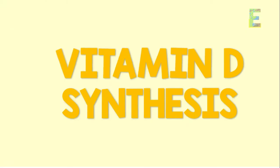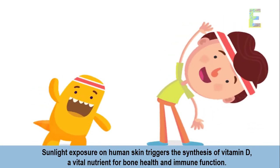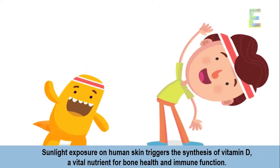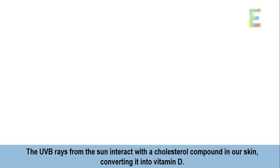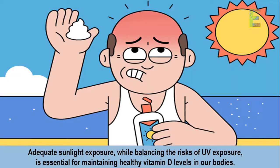Vitamin D Synthesis. Sunlight exposure on human skin triggers the synthesis of vitamin D, a vital nutrient for bone health and immune function. The UVB rays from the sun interact with the cholesterol compound in our skin, converting it into vitamin D. Adequate sunlight exposure, while balancing the risks of UV exposure, is essential for maintaining healthy vitamin D levels in our bodies.